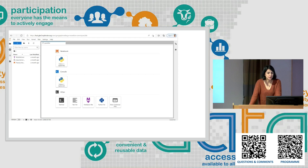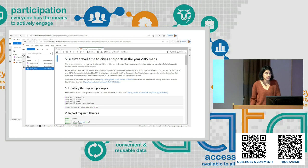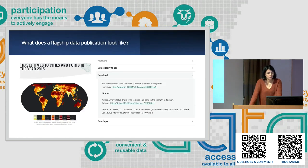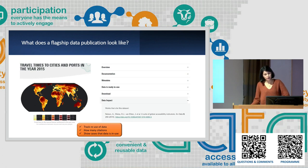Under 'data is ready to use,' there is the reusable link that Binder provides to access the Jupyter Notebook for exploring the data. For example, for this dataset, if you click the link a Jupyter Notebook opens and people can start using the data — exploring it, creating a subset, and doing basic analyses that data producers find useful for users. Under download, there is the URL for the dataset and how to cite it. Under data impact, we list works that cite this dataset. This part should be automated so we don't need to update it manually.